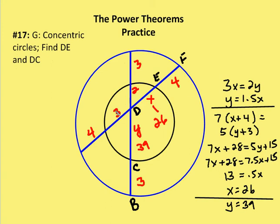First, we're going to use the chord-chord power theorem on the smaller circle. Labeling points G, E, and H, I know that GD times DE equals three times X, which is going to equal HD times DC, which is two Y. So three X equals two Y, and I can rewrite Y in terms of X: Y is equal to 1.5X.